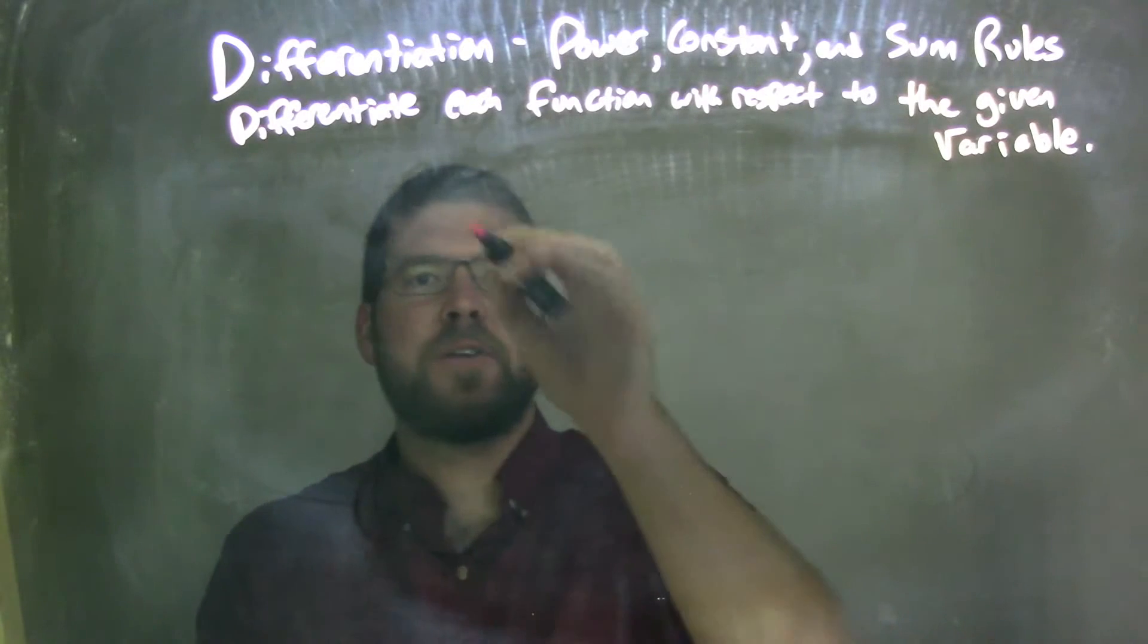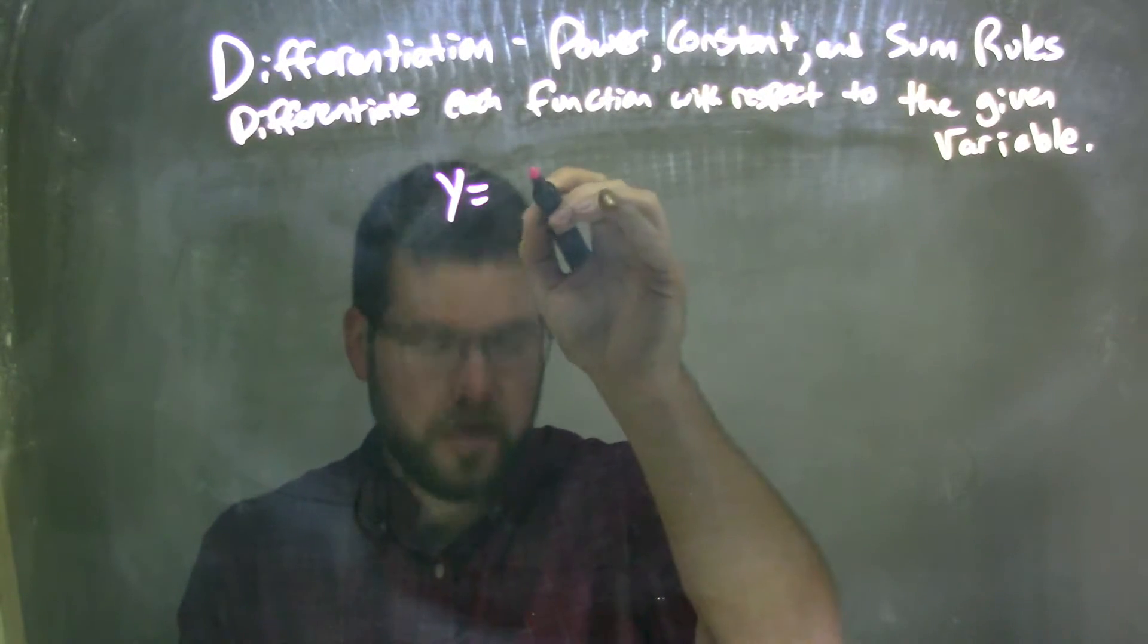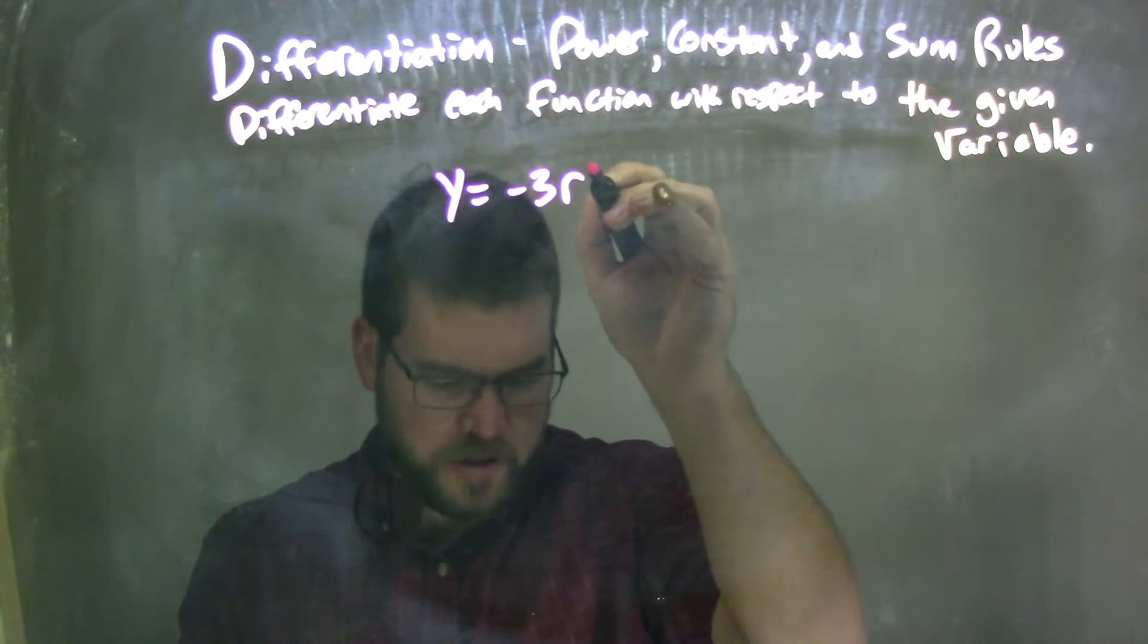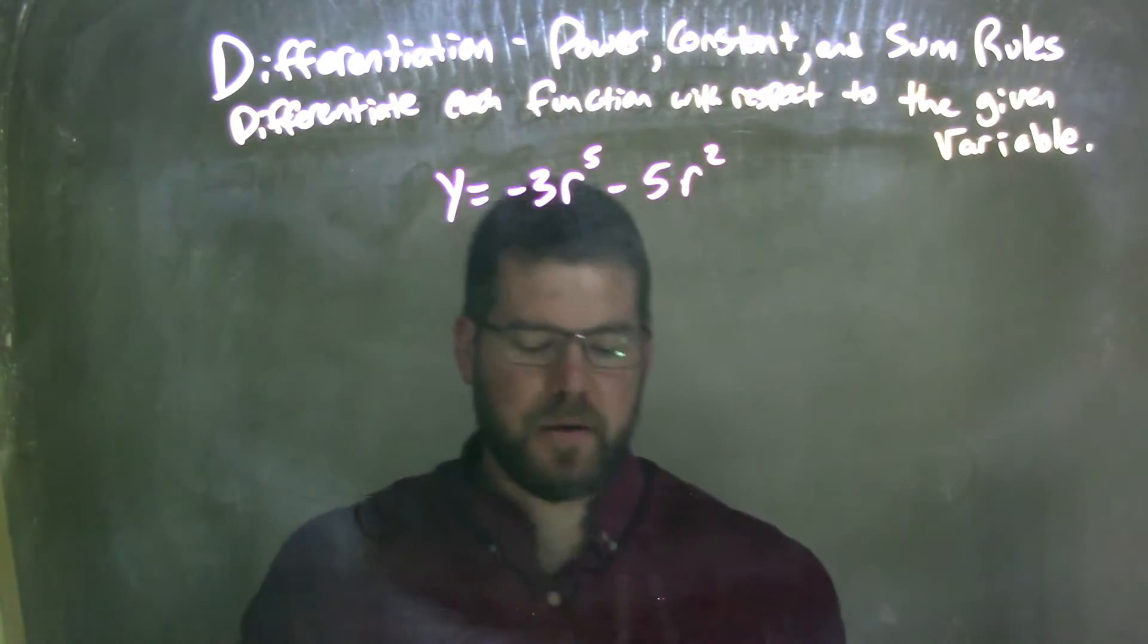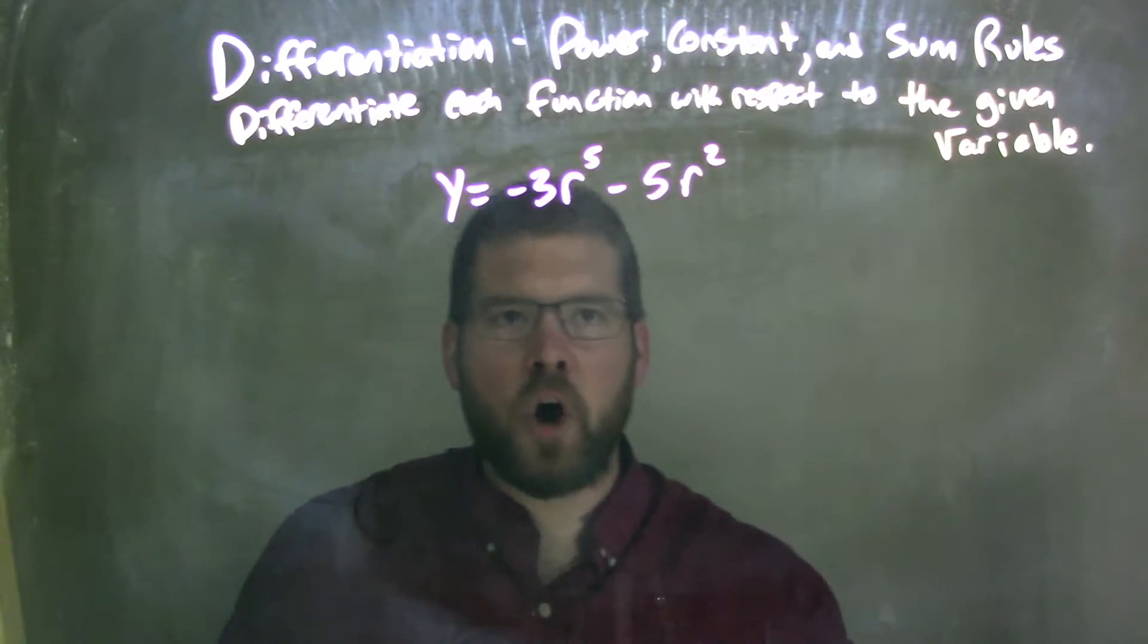So if I was given this function, y equals negative 3r to the fifth power minus 5r squared. My given variable here is r.